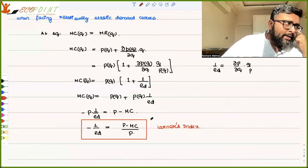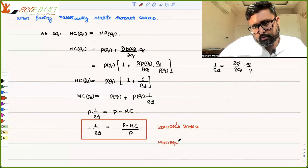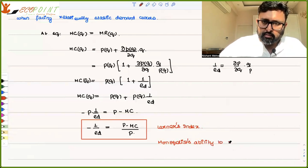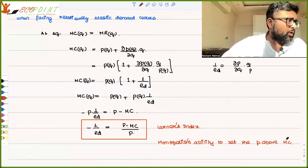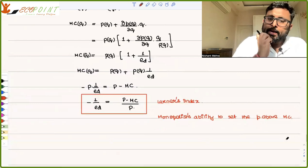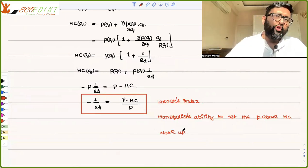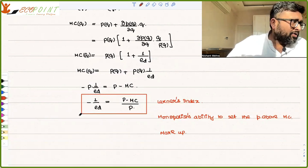This is what the Lerner Index is — the monopolist's ability to set the price above marginal cost. It is also called the markup, because it gives you the opportunity to set the price above the cost — a markup over the cost.